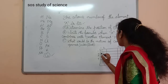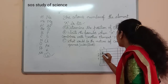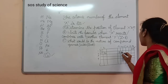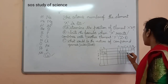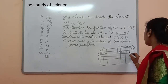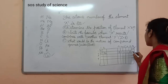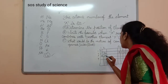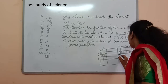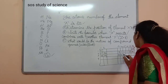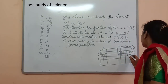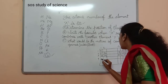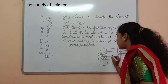The third element is lithium, then beryllium, boron, carbon, nitrogen, oxygen, fluorine, and neon. Next: sodium, magnesium, aluminium, silicon, phosphorus, sulfur, chlorine, argon, potassium, calcium.